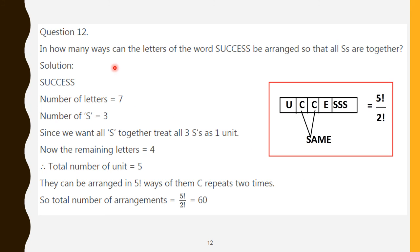Question number 12: In how many ways can the letters of the word SUCCESS be arranged so that all S's are together? Since S always stays together, consider the 3 S's as a single unit. Total letters in SUCCESS is 7, so with 3 S's as one unit, we have 5 units: S-unit, U, C, C, E. They can be arranged in 5 factorial ways. Since C repeats 2 times, divide by 2 factorial. Total answer: 120 by 2 equals 60.